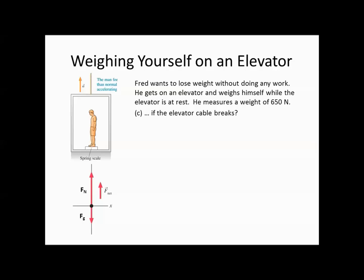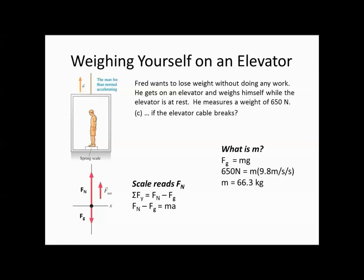Now we're going to put a dummy that looks like Fred in the elevator and break the cable. The acceleration downward is negative 9.8 meters per second squared — free fall. That gives us a normal force of 0 newtons, so it will appear that he is weightless. This is actually what happens in a space shuttle orbiting the Earth. The orbit is in free fall, falling towards the Earth at 9.8 meters per second squared. There is gravity in outer space — the reason astronauts appear weightless is because they are falling in the shuttle at all times.